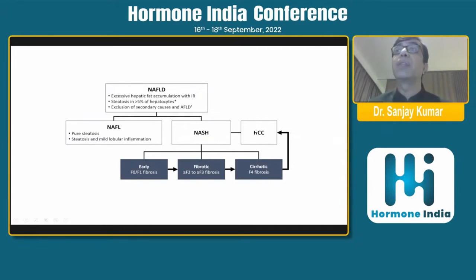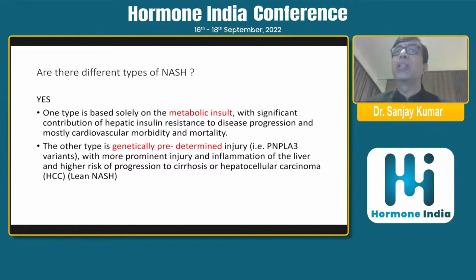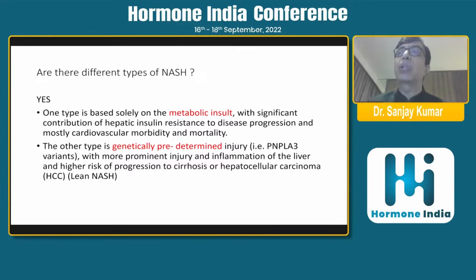Our second index patient had HCC without developing cirrhosis. There can be different types of NASH: one based on metabolic insult, as seen in diabetics and those with metabolic syndrome; and another genetically predetermined type, in which the PNPLA3 variant and other mutations cause more prominent liver injury and inflammation, with a higher risk of progression to cirrhosis or HCC. This is the mechanism for cirrhosis in lean NASH patients, as they are genetically predetermined for progression.